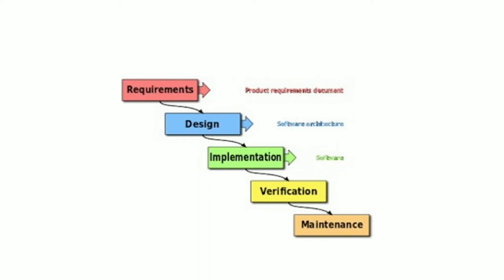It was popularized in the 1970s and permits most of the current standards in industrial practices. Since no formal software development methodologies existed at the time, this hardware-oriented model was simply adopted for software development. The waterfall model was the first process model to be introduced. It illustrates the software development process in a linear sequential flow, hence it is also referred to as a linear sequential lifecycle model. In this model, each phase must be completed before the next phase can begin and there is no overlapping in the phases.